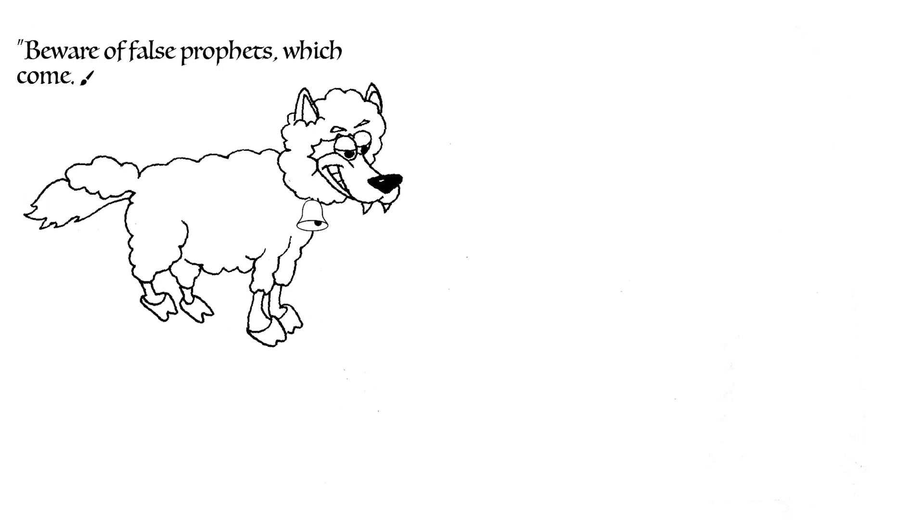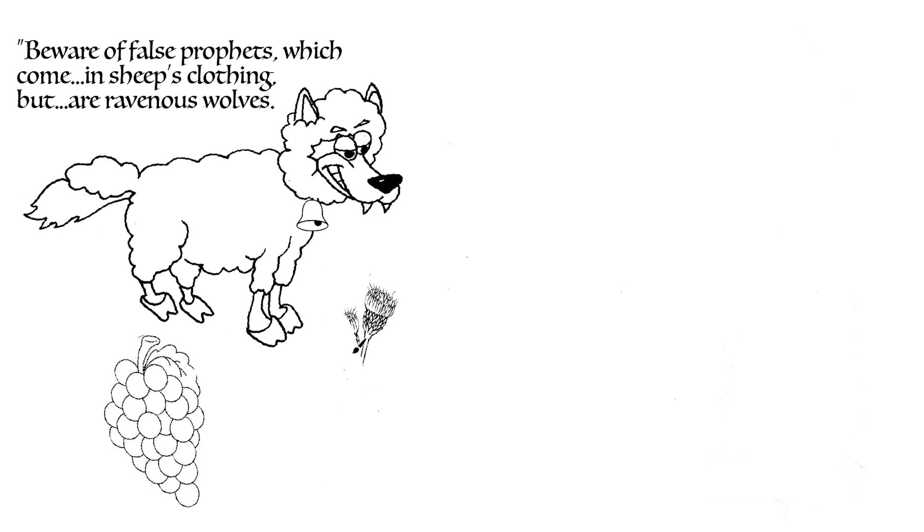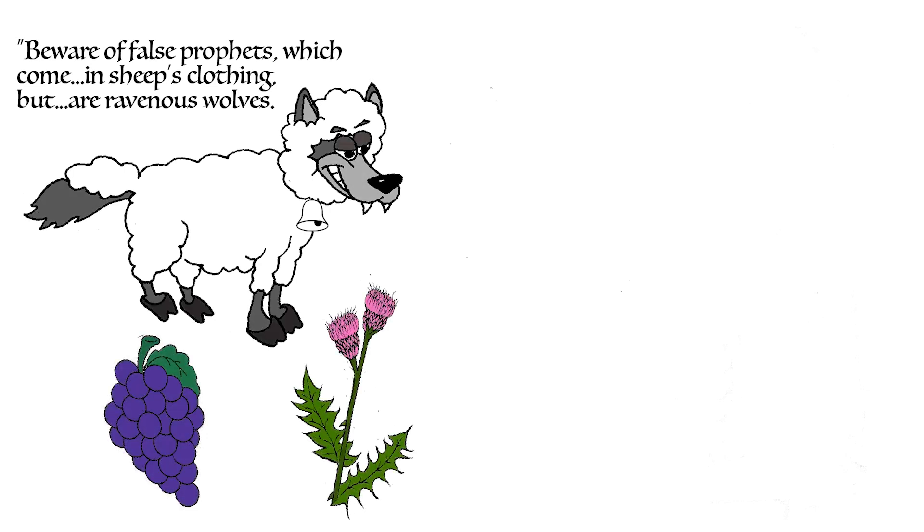Jesus warned about false prophets who disguise themselves in sheep's clothing, but are inwardly ravenous wolves. He said we would know them by their fruits, and asked if men gather grapes of thorns or figs of thistles. Grapes and figs were common fruit in the holy land, and people knew that the small berries on thorn bushes were not grapes on grapevines, and the flowers on thistles were not the petals that produce figs.